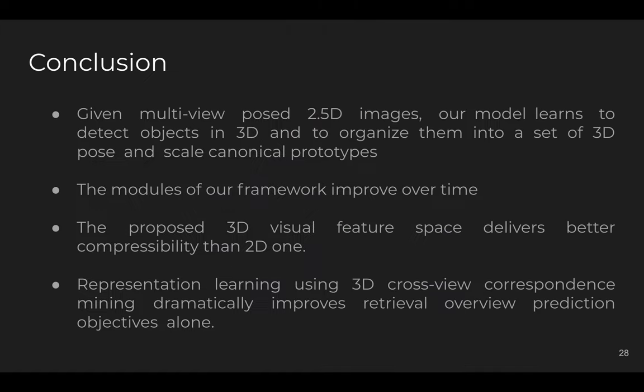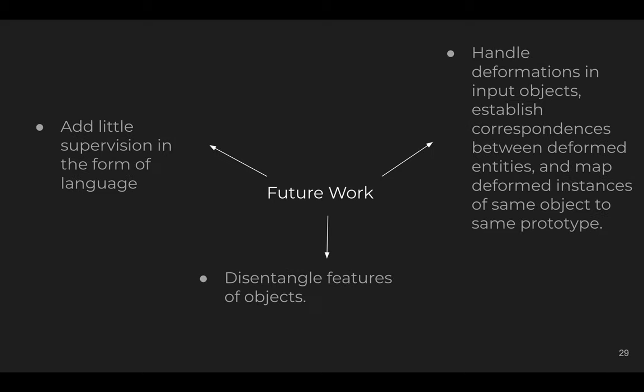In conclusion, given multi-view RGBD images, our model can learn to detect objects and organize them into 3D pose and scale canonical prototypes. The modules improve over time. The proposed 3D visual feature space delivers better compressibility than 2D, and representation learning using 3D cross-view correspondence mining dramatically improves retrieval over view prediction objectives alone. Future work involves disentangling features of objects for better retrieval, adding supervision in the form of language, and handling deformations to establish correspondences between deformed entities.